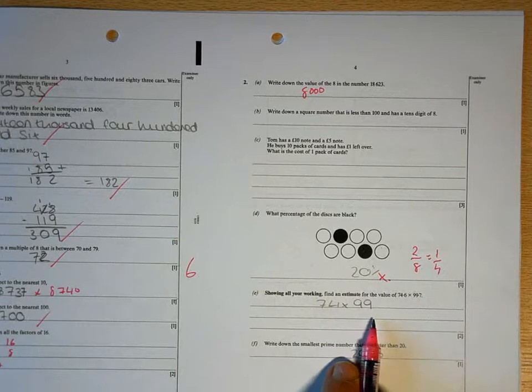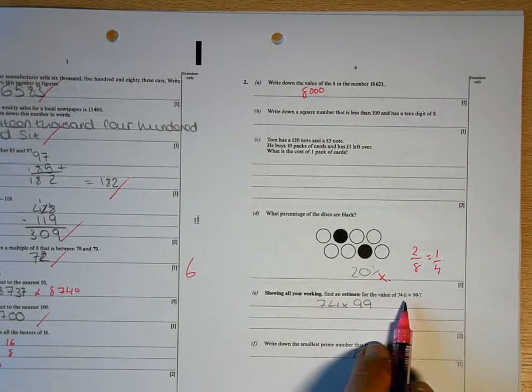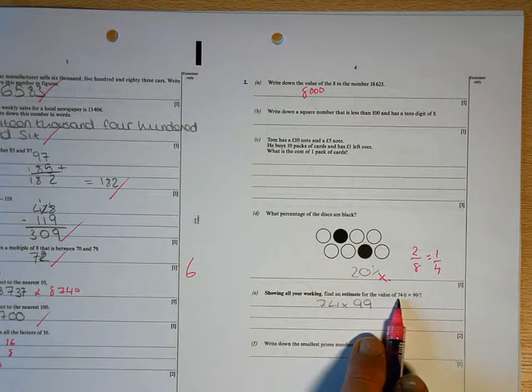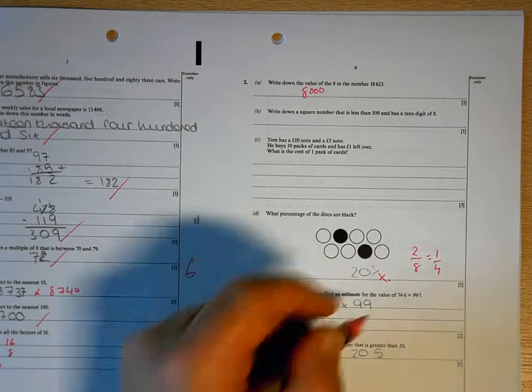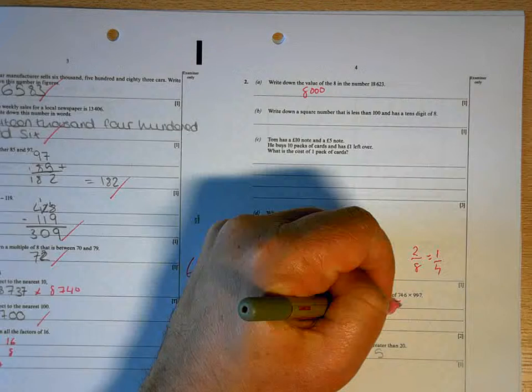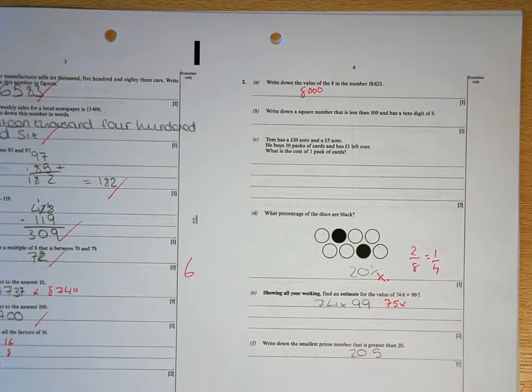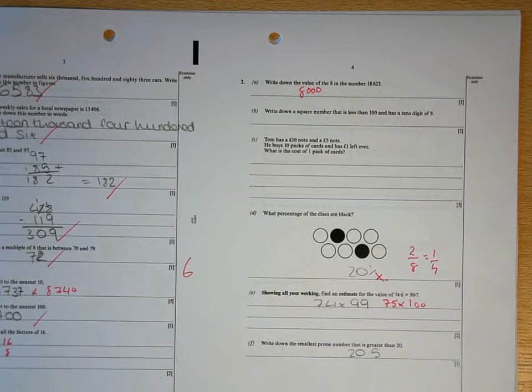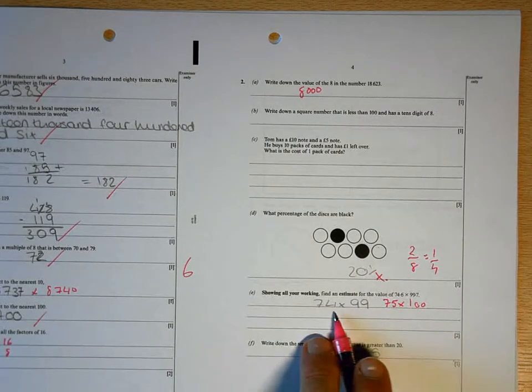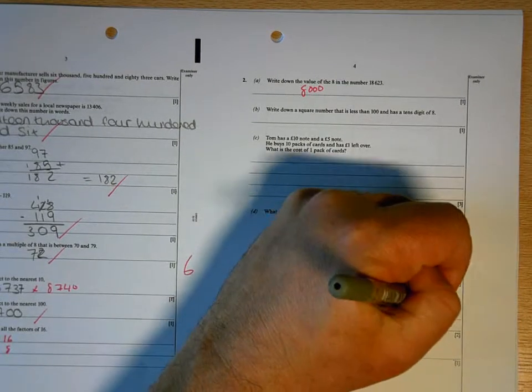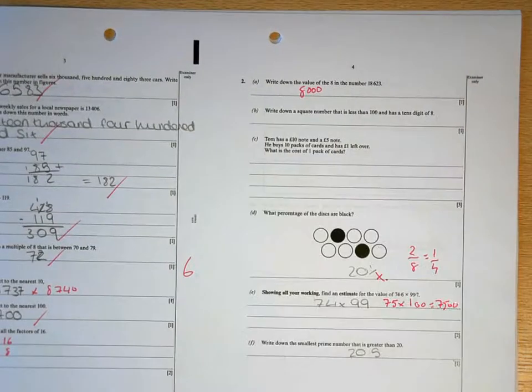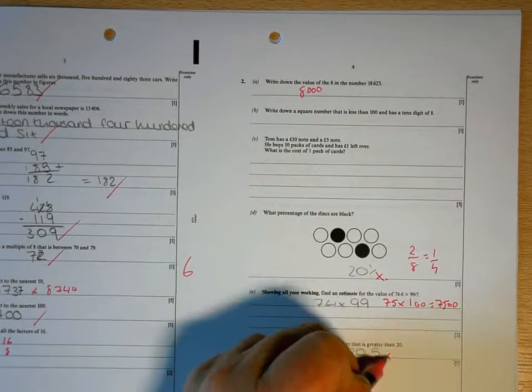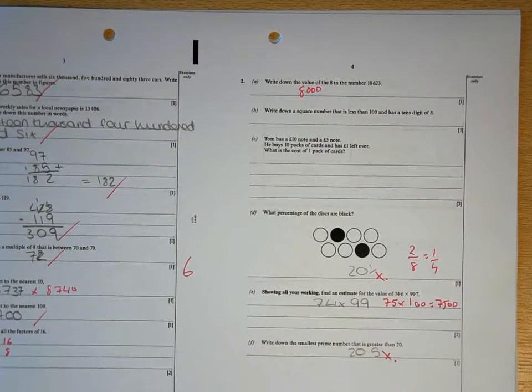When you're trying to estimate something, you make your numbers as easy as possible. So that is actually closer to 75 than it is 74. And multiplying by 99 is horrible. Multiplying by 100 is easy. So what they're looking for there is for you to round it to 75 times 100, which is then that. And that isn't a prime number.